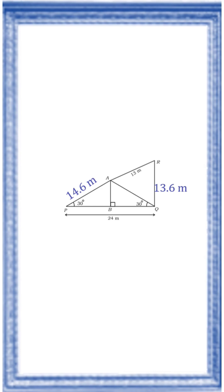Now in triangle APB we know AP, that is 14.6. So by using sin ratio we can find AB. In triangle APB, sin 30 is equal to opposite by hypotenuse, that is AB by AP.